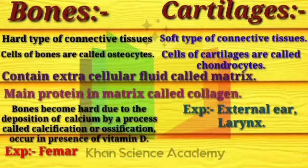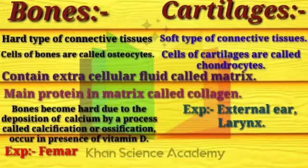Bones are a hard type of connective tissue. Cells combine to form tissue, and bone is a connective tissue. The cells of bones are called osteocytes.